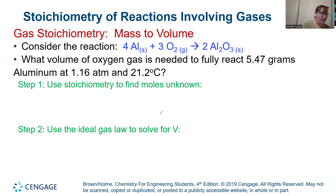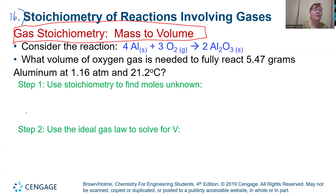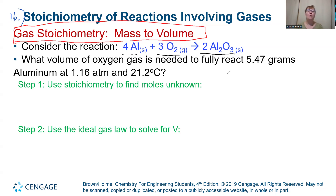Next we have slide 16. The next two slides are going to be looking at gas stoichiometry. Gas stoichiometry is different depending on whether it is mass to volume or volume to mass, so make sure you isolate that distinction on your cheat sheet. Mass to volume gives you one set of steps, and we'll work through that now.